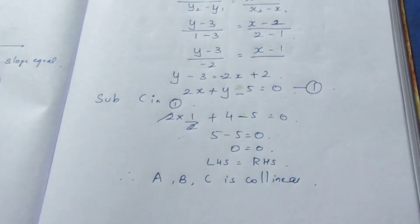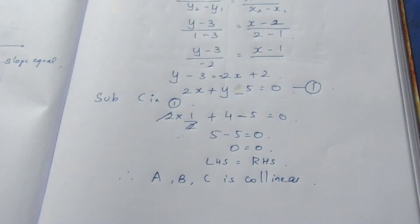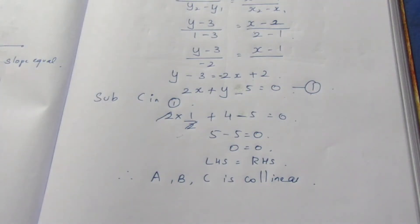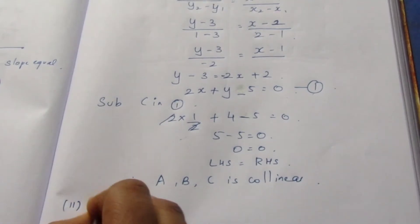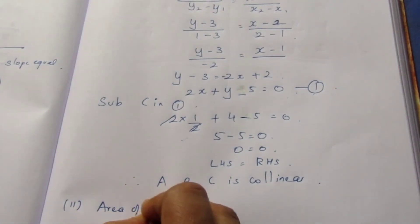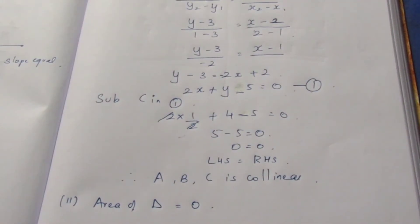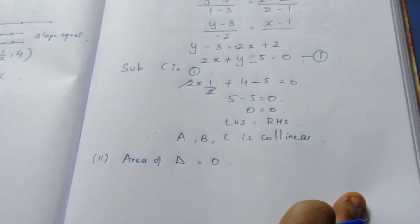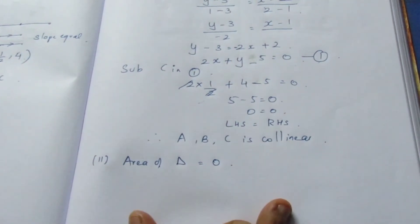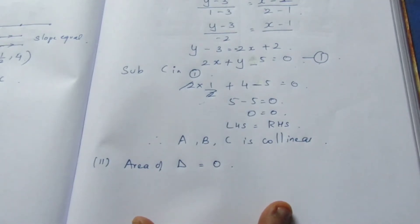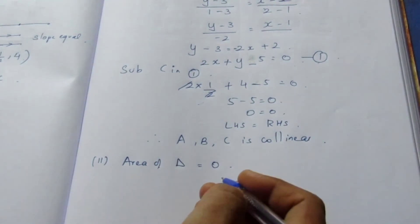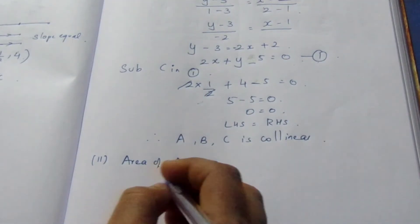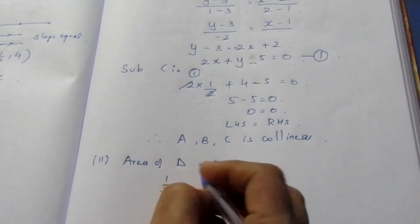The third method uses the concept of the area of a triangle. If three points are collinear, the area of the triangle formed by them equals zero. We use the area formula directly with points (1,3), (2,1), and (1/2, 4).